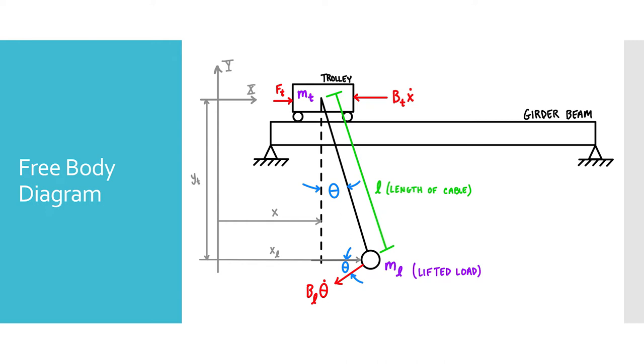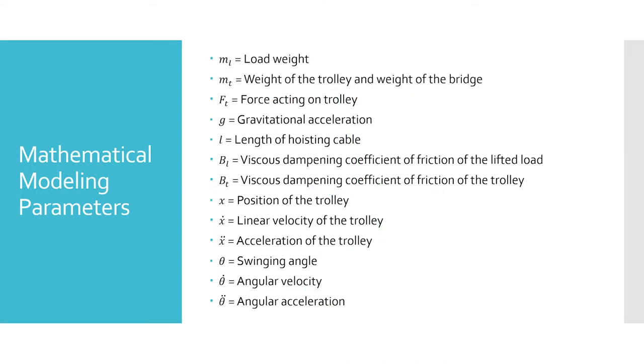Dimensional parameters of this free body diagram include the length of the cable, L, the distance from the center of the trolley to a reference point, X, and the angle made between the vertical and swinging masses. These are the parameters used in the analysis of the overhead crane.